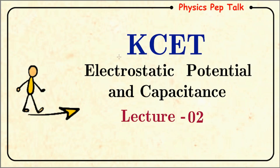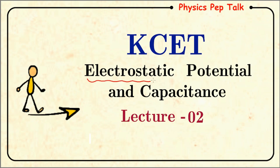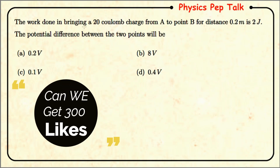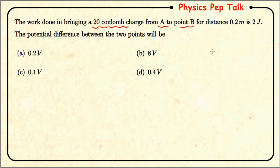Hello everyone, welcome to Physics Pep Talk. Let us continue solving multiple choice questions on electrostatic potential and capacitance. Let us look into the first question: the work done in bringing a 20 coulomb charge from point A to point B over a distance of 0.2 meters is 2 joules. The potential difference between the two points will be?